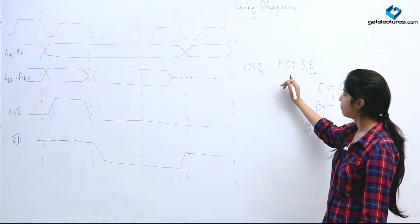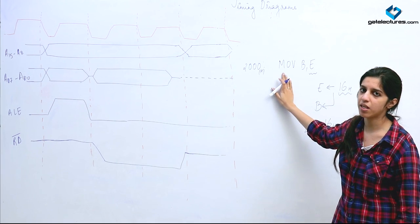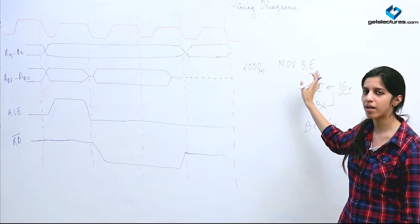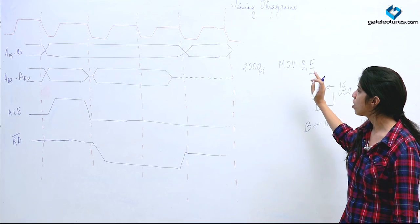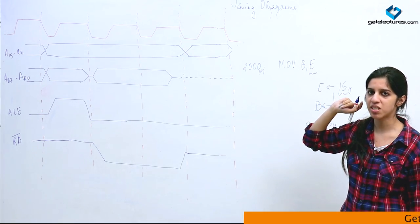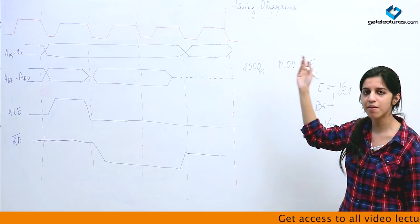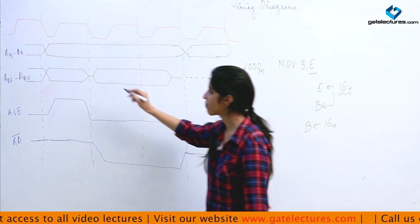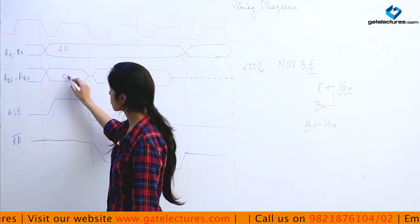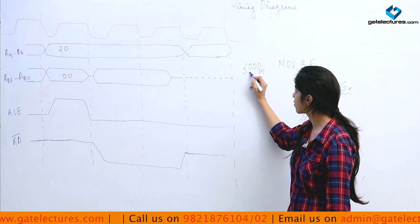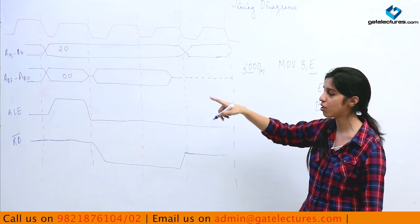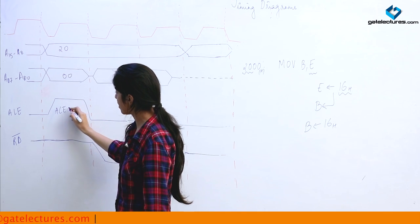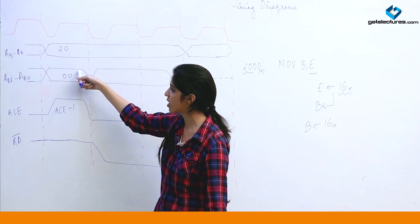This instruction does not involve any memory read or memory write, because both the destination and source registers lie inside the microprocessor itself — memory is not involved. So we only need one machine cycle for opcode fetch, and in that same machine cycle we execute the instruction. We put address 2000H on the address bus — 20H in the higher lines and 00H in the lower lines — then make ALE 1 so this bus behaves as an address bus.